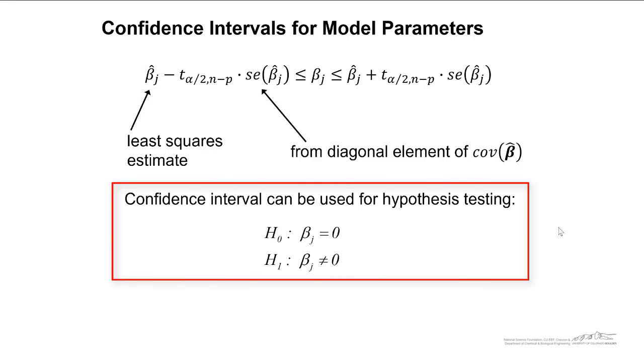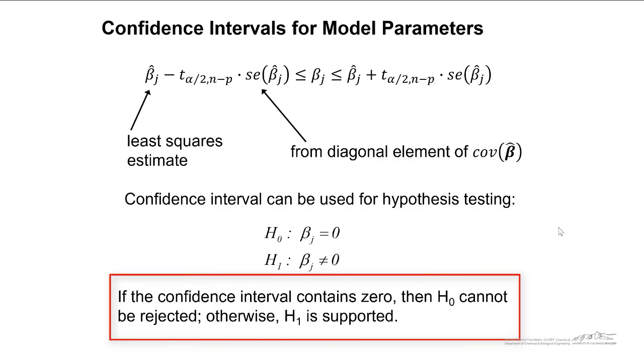We can use confidence intervals, by the way, for hypothesis testing. If the confidence interval contains zero, then we cannot rule out the null hypothesis and it cannot be rejected. Otherwise, if our confidence interval does not include zero, then this supports our alternate hypothesis.